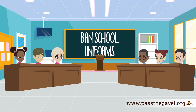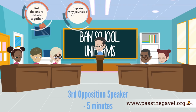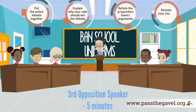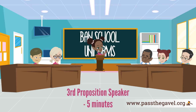The third opposition speaker then speaks for five minutes. As the third opposition speaker, you should put the entire debate together and explain why your side should win. This is your team's final opportunity to refute the proposition team's arguments and restate your team's arguments. No new arguments are permitted in the third opposition speech.